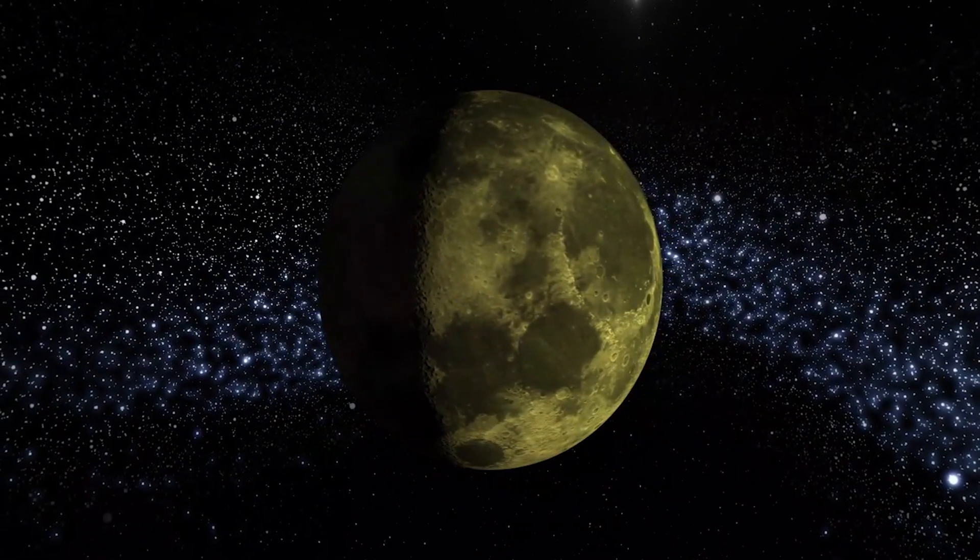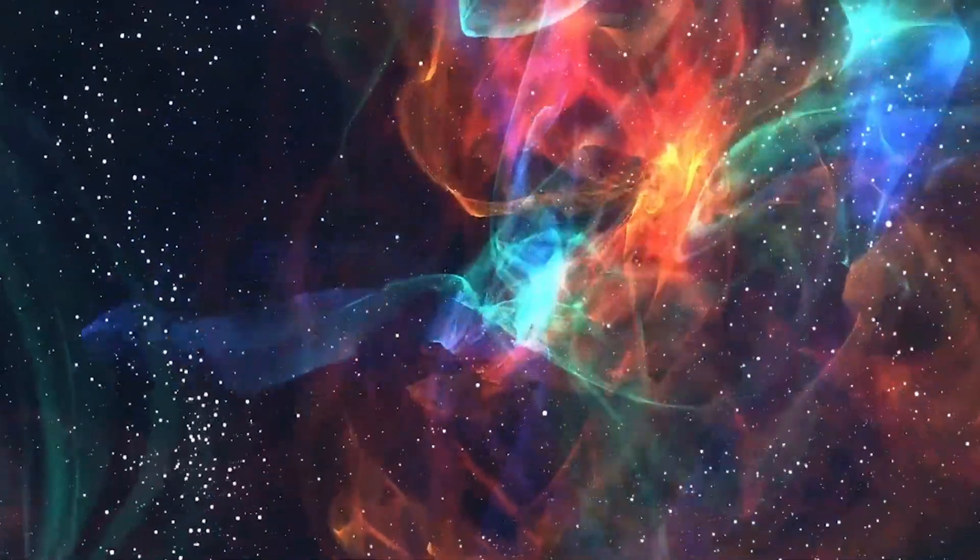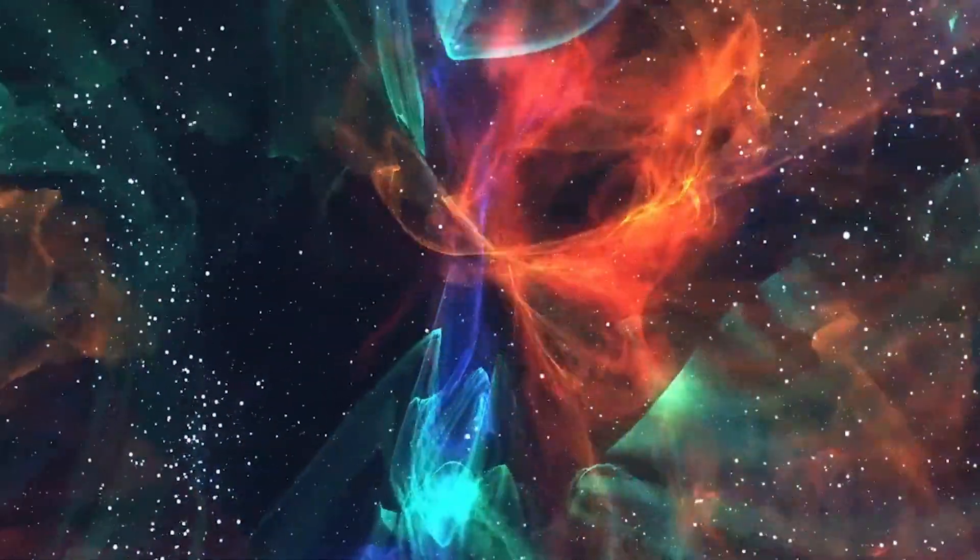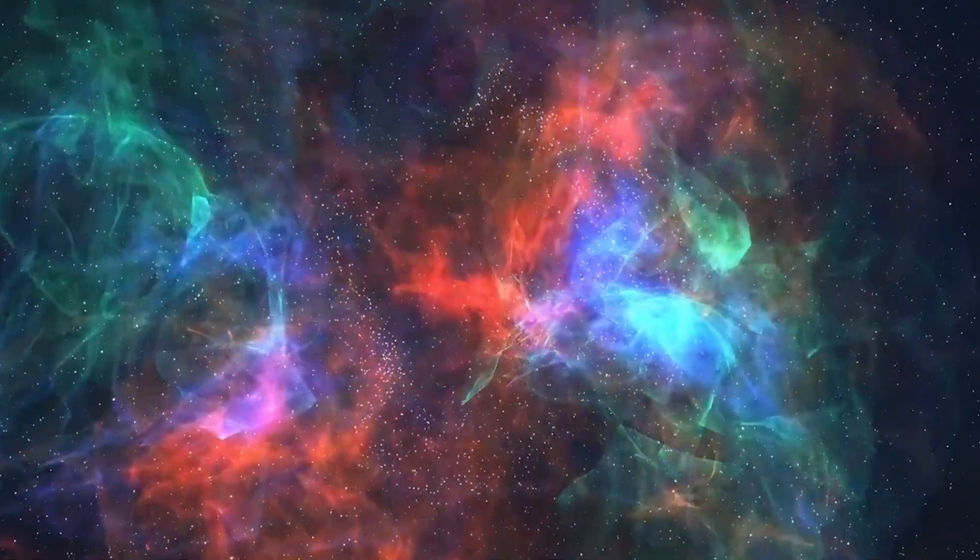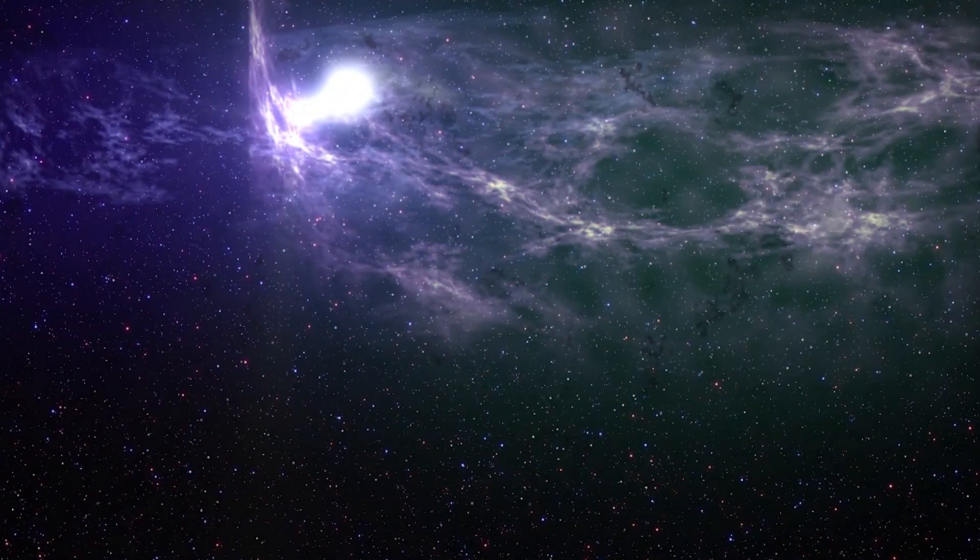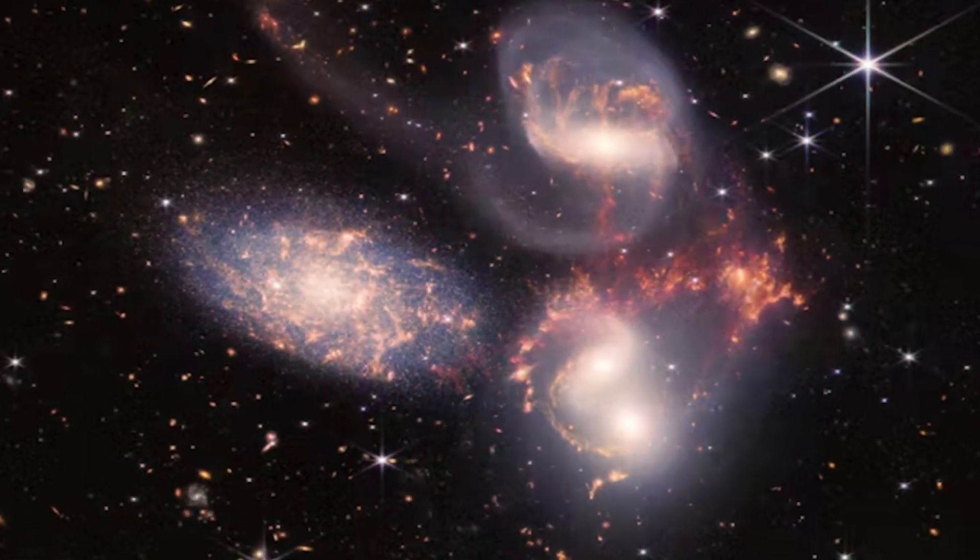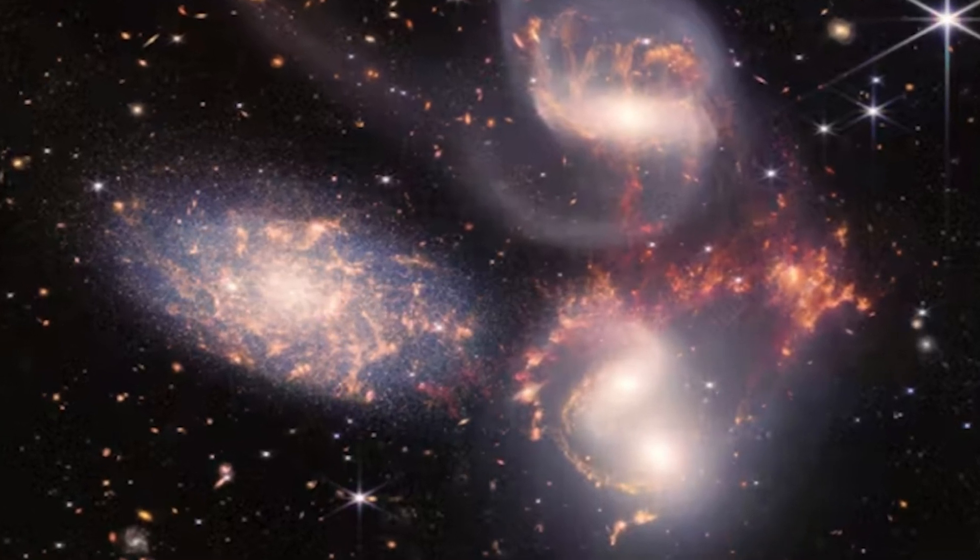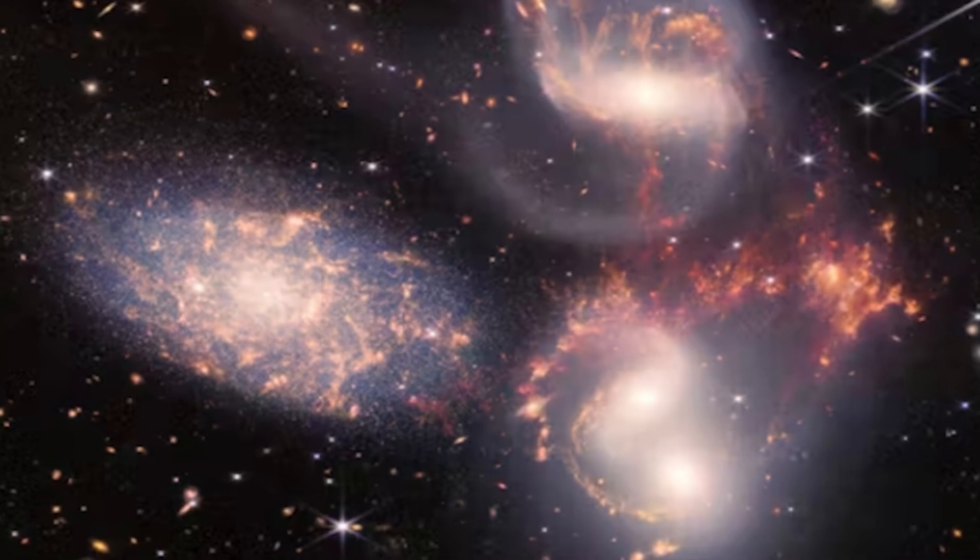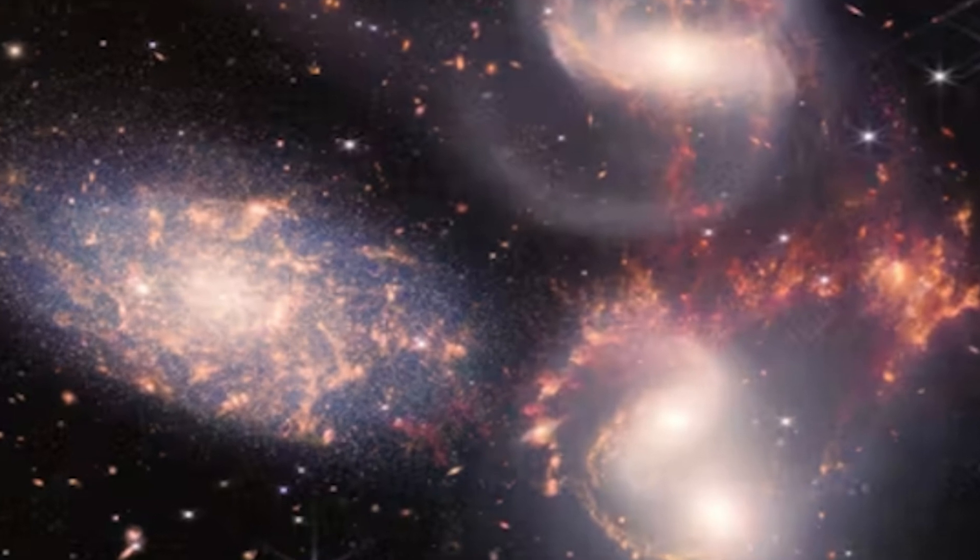Interestingly, Stephan's Quintet image, as released by NASA, is a composite of 1,000 different image files, with the end product rated 150 million pixels. With its powerful infrared vision and extremely high spatial resolution, Webb shows never-before-seen details in this galaxy group. Sparkling clusters of millions of young stars and starburst regions of fresh star birth grace the image. Sweeping tails of gas, dust, and stars are being pulled from several of the galaxies due to gravitational interactions.